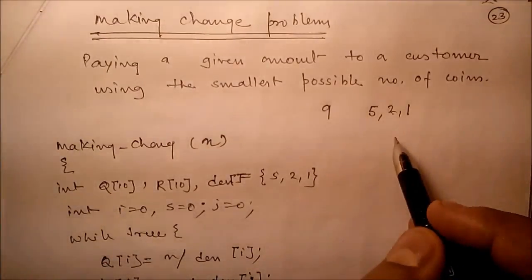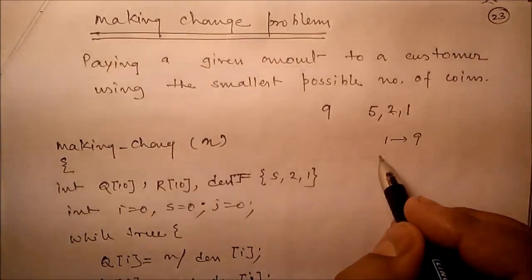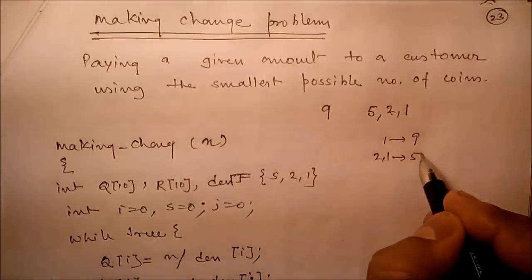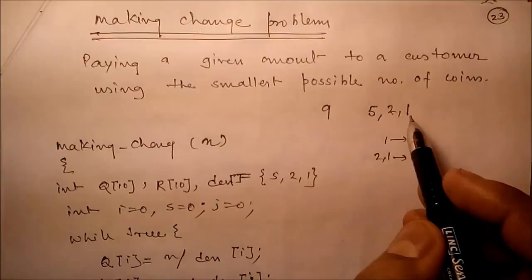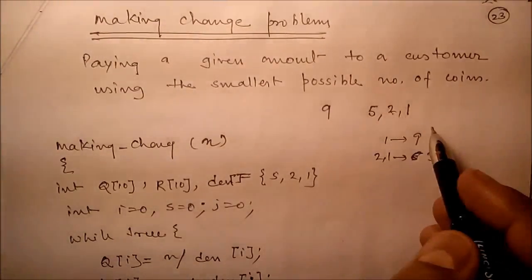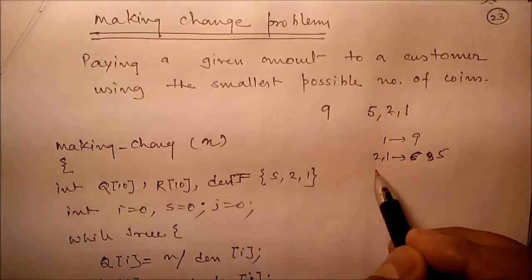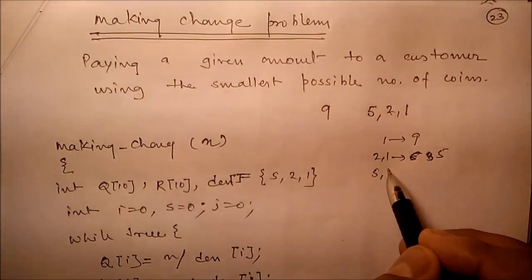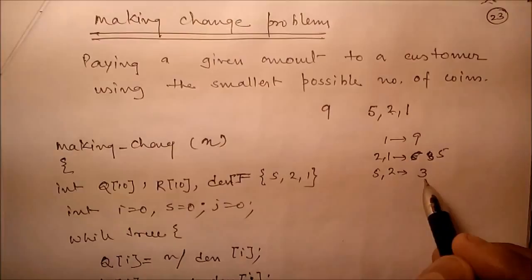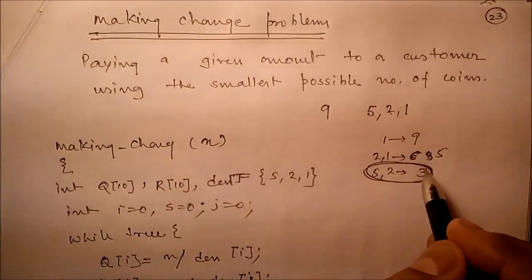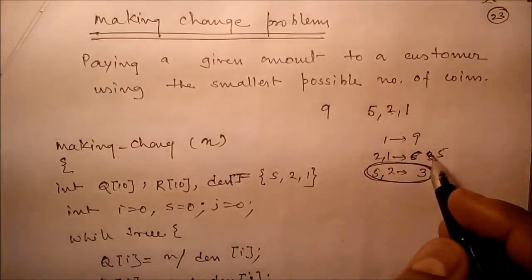So if you return 9 one rupees, total number of coins is 9. If you return 4 two rupees and 1 one rupee, that's 4 plus 1, so 5 coins total. Or 1 five rupees and 2 two rupees, that means 3 total coins. So this will be our expected result. Our aim is to return the smallest possible number of coins.